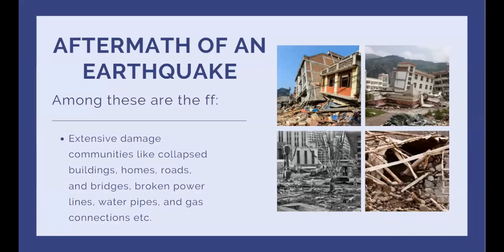After a strong earthquake, there are many changes that occur. These include extensive damage to communities such as collapsed buildings, homes, roads, and bridges, broken power lines, water pipes, and gas connections, damaged communication lines, and other important structures.